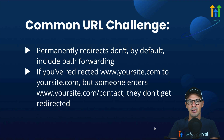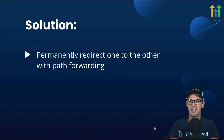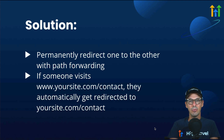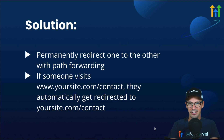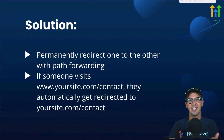The solution is to use the asterisk wildcard. We can permanently redirect one domain to another including all of the paths by using an asterisk, which we've built into the setting. Once set up, if somebody goes to www.yoursite.com/contact, they'll automatically get redirected to yoursite.com/contact.